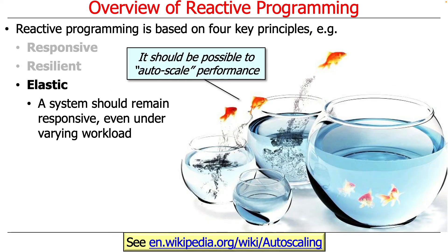Another important principle is elasticity. The system should remain responsive even as the workload goes up — this is commonly known as auto-scaling. If you take a cloud computing or big data course, you'll see that when you get more work, you grow the amount of processing resources to handle it, typically by allocating additional computers in a cluster, cores in a multi-core machine, or some combination of both.